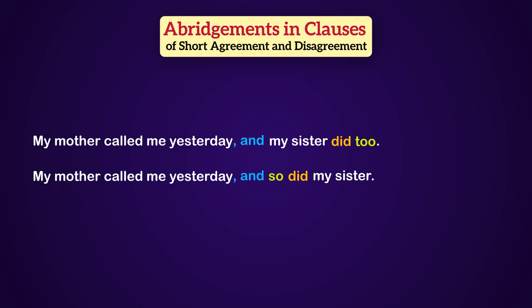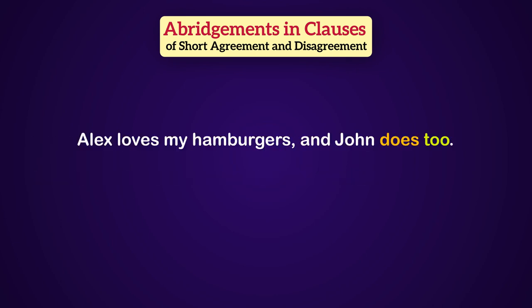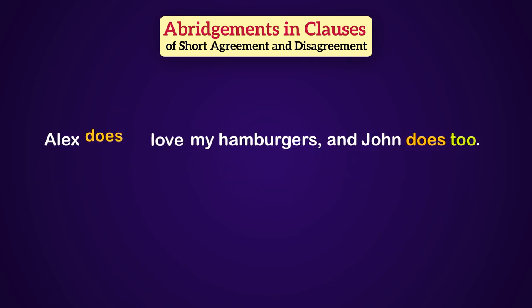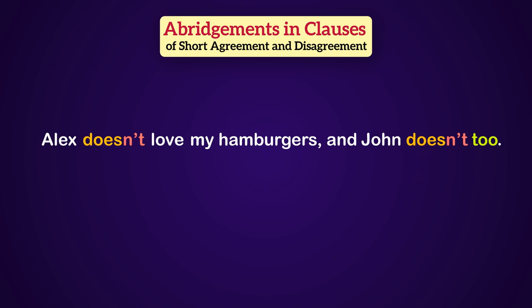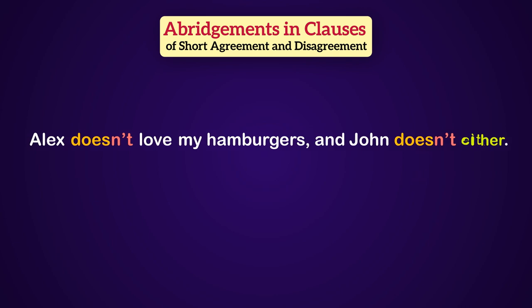So far we have had two affirmative sentences, which are basically positive. But what if we have a negative sentence? For example: Alex doesn't love my hamburgers. We have to make the second auxiliary negative as well. But instead of 'too,' we have to use 'either': Alex doesn't love my hamburgers, and John doesn't either.